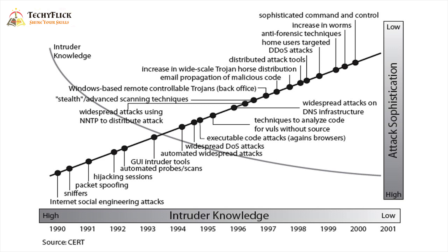Starting in 1990, our intruder's knowledge is higher. The intruder is a hacker, so our knowledge is higher. Day by day it will increase — our intruder's knowledge is higher. It will overcome the software and techniques. Let's talk about the security trend between 1990 and 2001, and we will see an explanation of the diagram.